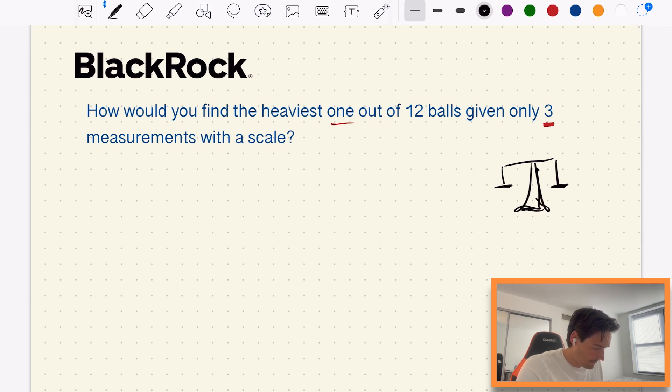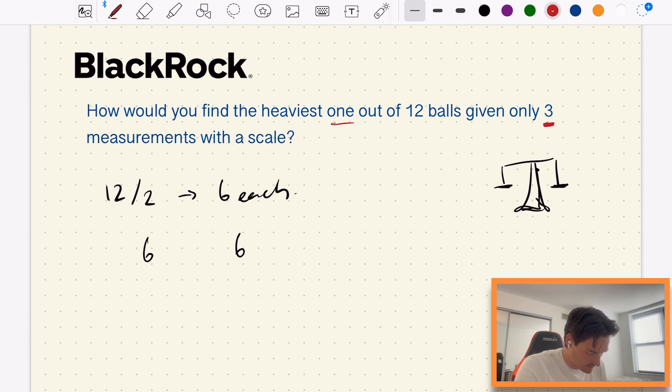So let's just begin by splitting the 12 balls in two. If we split the 12 balls in two we get six balls each, so we'll have six and six. That's one split right here. Now we can weigh them, we can compare these, and let's say what we get is this six is larger than that six.